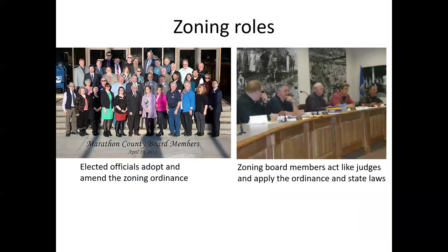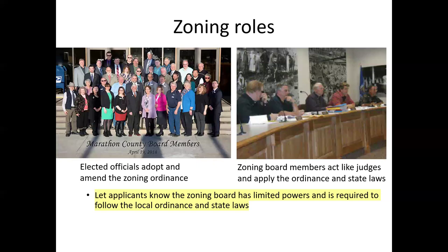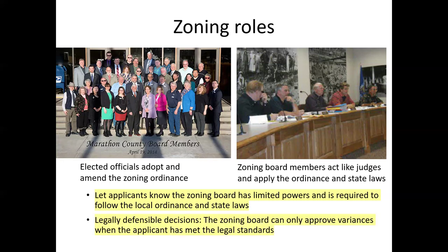It's the elected officials that adopt and amend the zoning ordinance — they decide what it says and represent their constituents. In contrast, zoning board members act like judges and apply the ordinance as it's written today, as well as state laws. The zoning board does not have the authority to change the law. They're only allowed to approve variances when the applicant shows they've met all three legal standards. There are three in Wisconsin law that always apply.